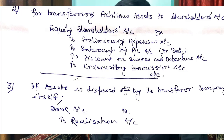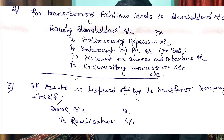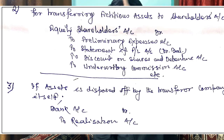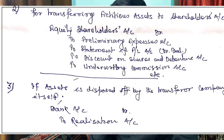Journal entry number three: if an asset is disposed of by the Transferor Company itself — that is, an asset the Transferee Company is not taking over and the Transferor Company sells it — the entry is: Bank Account debit, to Realization Account. Note: do not write Bank Account debit to Assets Account, because the assets are already transferred to Realization Account. So the correct entry is Bank Account debit, to Realization Account. Now our assets side is empty and the balance sheet concept is cleared.